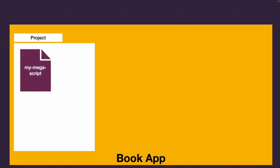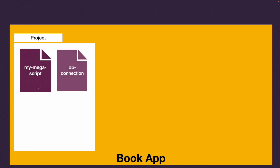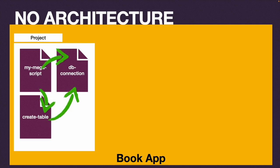Let's say you want to build an app where you can keep track of all your books. You create a project folder and write out your mega script. In programming languages like Python, PHP, or Node, you can probably write 20 or 30 lines of code where you enter some information about a book, add it to a database, retrieve it, and show it in a table. But just having a couple of files with a piece of responsibility each - that's not called an architecture.